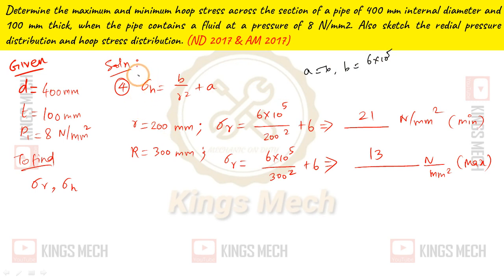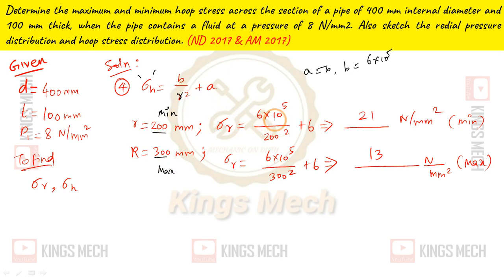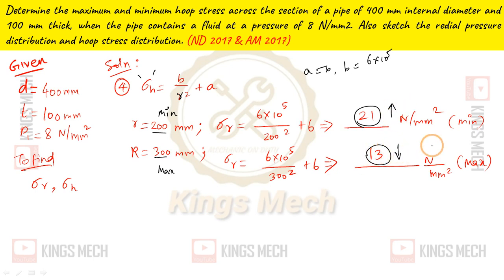From those values, we find the maximum and minimum hoop stress. At minimum radius r = 200 (inner), hoop stress = B divided by r squared plus A = 6 into 10 power 5 divided by 200 squared plus 6 = 21. At maximum radius R = 300 (outer), hoop stress = 6 into 10 power 5 divided by 300 squared plus 6 = 13.